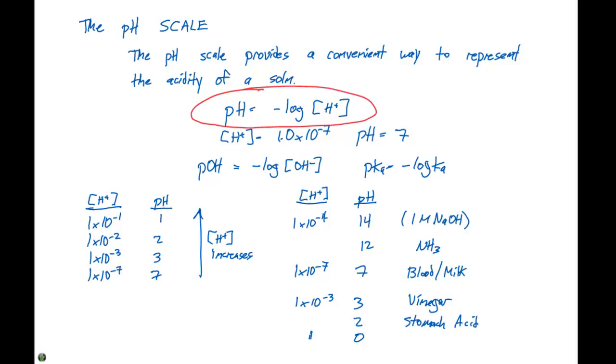And the key thing here is that whenever you see a lowercase p in front of something, such as the pH, it's going to be the negative log of the H plus concentration. The pOH is going to be the negative log of the OH minus concentration, and the pKa is going to be the negative log of the Ka.